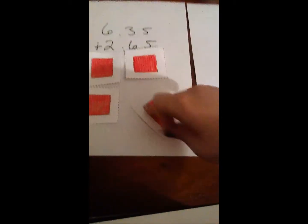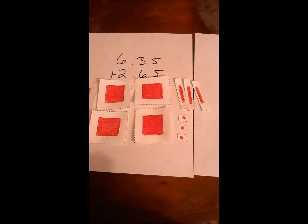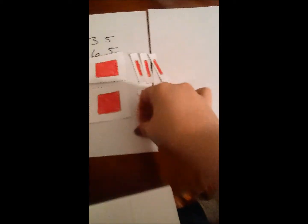We're going to start with 6 flats, 3 longs. Try to get enough room on here. So, 3 longs and 5 units, 2, 3, 4, 5.